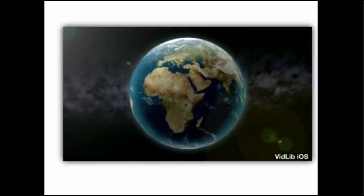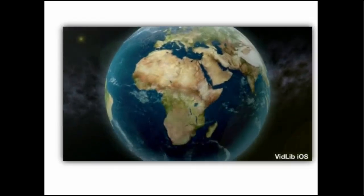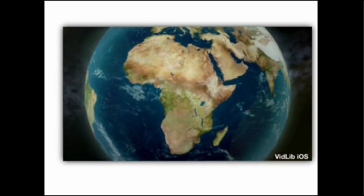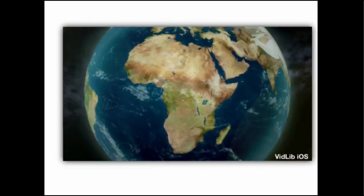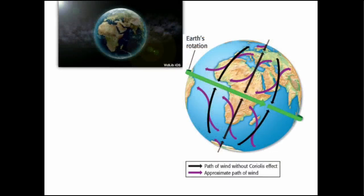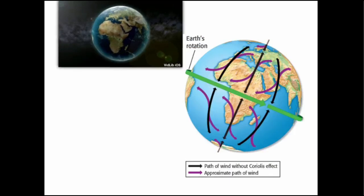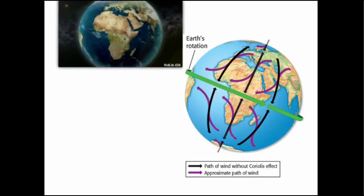Our earth is spinning. This has a huge effect on the way things travel on our planet. Because our earth is spinning, the winds change direction.